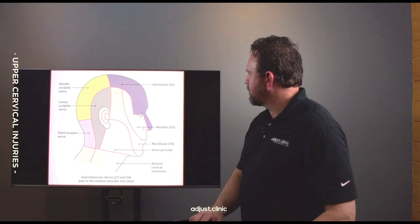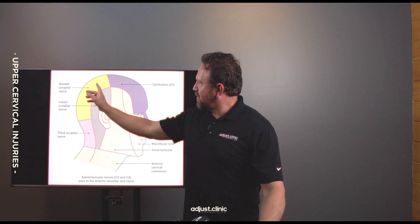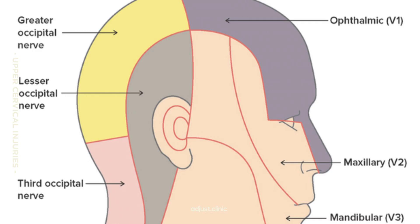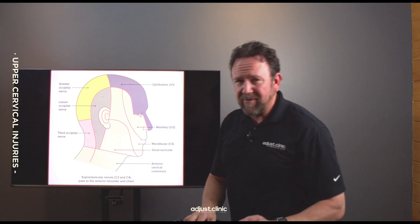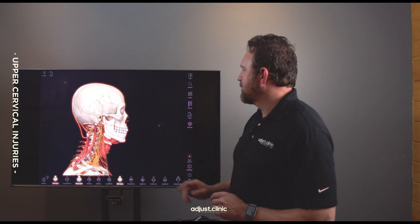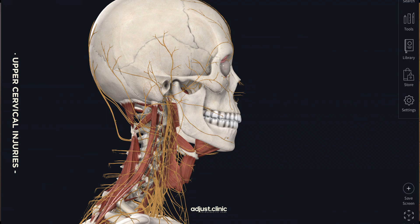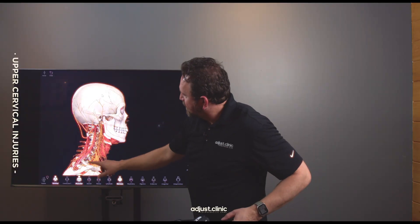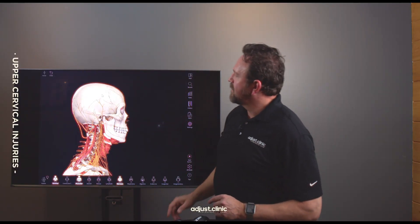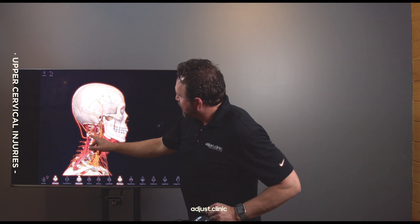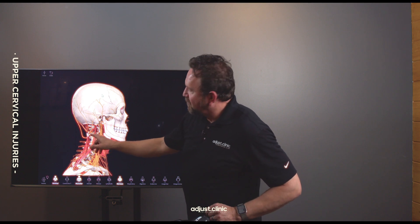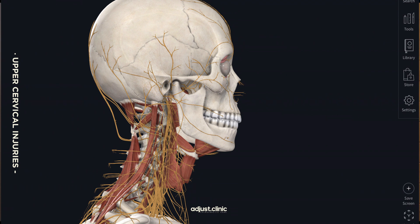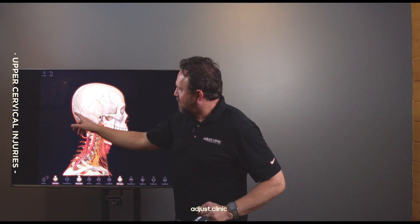But also the greater occipital nerve — it innervates this part of the skull right here. The greater occipital nerve comes from the upper neck. When you look at some anatomy apps, you see kind of a loose network of nerves: the skull, the neck, and some of the neck muscles back here. The greater occipital nerve comes out between C2 and C3, the second and third segments of the neck, passes through muscle layers and goes up to the skull.